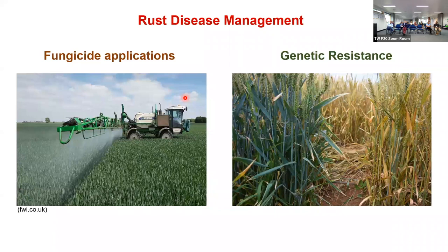Coming to rust management, there are two main strategies. One is fungicide application — the most instant and immediate control. However, it's not very welcome. For example, in Denmark, if you have two or three sprays of fungicide on your wheat, your premium will be reduced, because consumers want wheat with very low toxic chemical residues. Even in Australia, they are working toward giving high premiums to wheat grown without chemical residues.